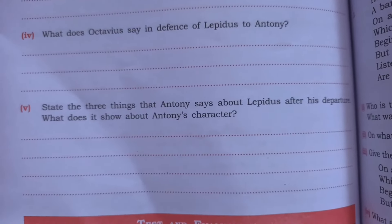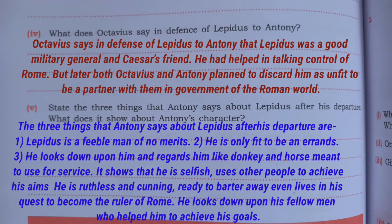Question five: state the three things that Anthony says about Lepidus after his departure. What does it show about Anthony's character? First, Lepidus is a feeble man of no merits. Second, he is only fit to run errands. Third, Anthony looks down upon him and regards him like a donkey and horse meant to be used for service. This shows that Anthony is selfish, uses other people to achieve his aims, is ruthless and cunning, ready to barter away even lives in his quest to become the ruler of Rome, and looks down upon those who helped him achieve his goals.